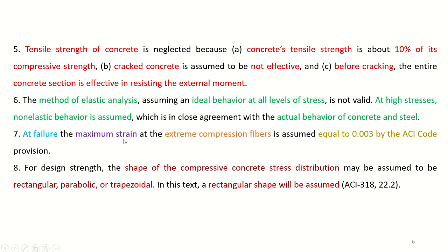Assumption 7: At failure, the maximum strain at the extreme compression fibers is assumed equal to 0.003 — this value refers to concrete and will recur throughout. Assumption 8: For design strength, the shape of the compressive concrete stress distribution may be assumed to be rectangular, parabolic, or trapezoidal. In this text, the rectangular shape will be discussed following ACI 318-22.2.